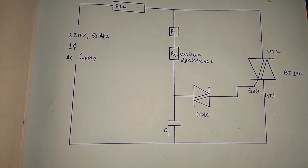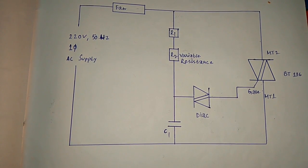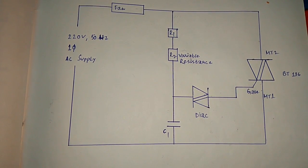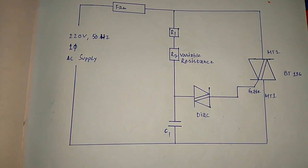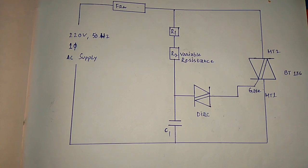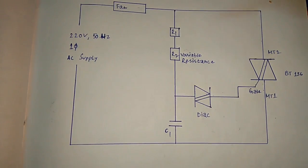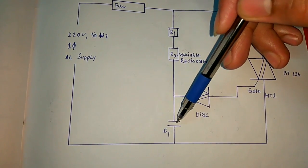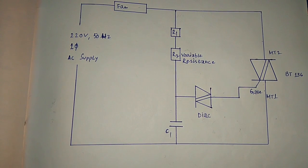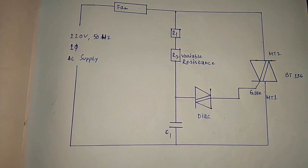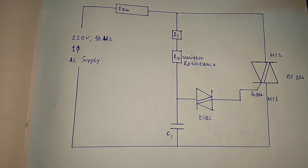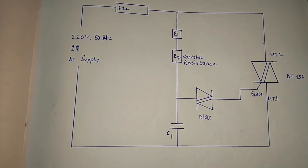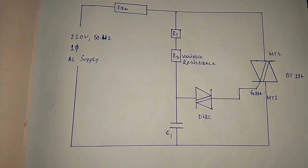As soon as we turn on the power supply of the circuit and observe the fan is still in standstill condition, vary the potentiometer, decrease it slowly, so that the capacitor which is placed here starts charging at its time constant.